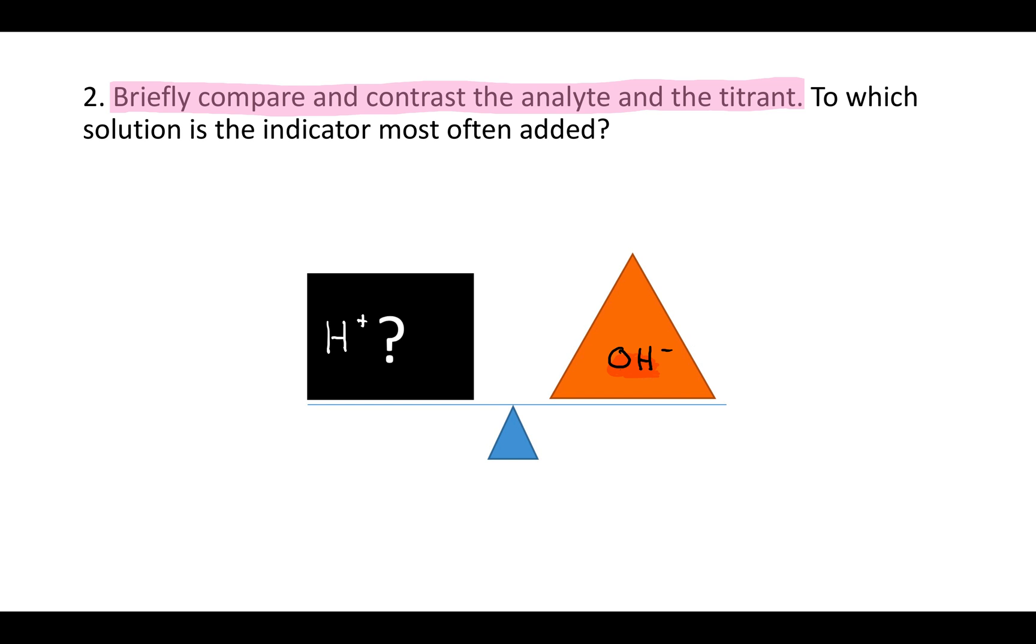A titration is the same idea, but the unknown that you start with isn't a weight, it's the amount of H plus ions that you have. If you remember, H plus is an acid. That's telling you how acidic something is. And what you're going to do to balance that out is not another weight, but rather OH minus ions. And when the solution is finally neutral, you'll know how many OH minus ions you added, and therefore you'll know how many H plus ions there had to be in solution. That's the thought process behind a titration.